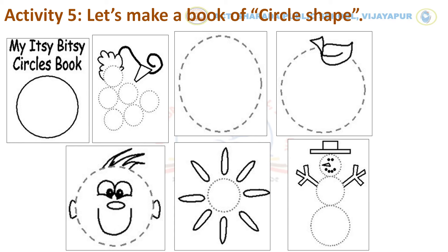Now, let's start with the first page — that is, coloring the circle. Let's move to the second page. In the third, fourth, and fifth pages, trace the circles. In the same way, you have to trace the sun and snowman picture and color it to complete this activity.